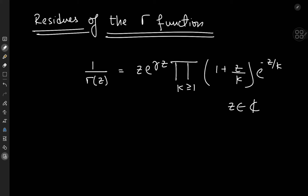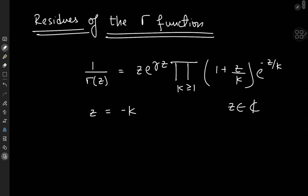The zeros of 1/Γ(z) are the poles of Γ(z). Looking at this equation, we see that the reciprocal of the gamma function is 0 whenever z equals negative k, and of course when z equals 0 as well. So the poles of the gamma function are all the non-positive integers, and these are all simple poles.